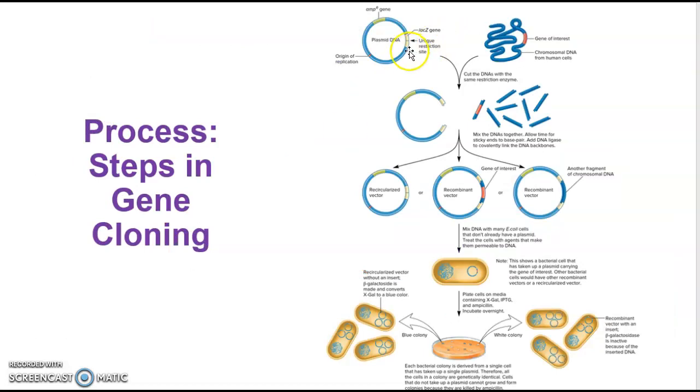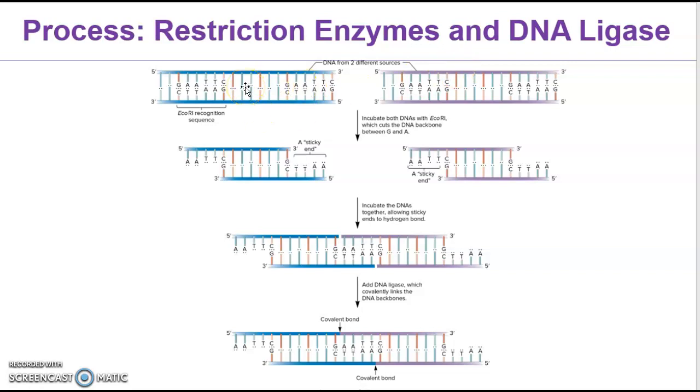So one here is a plasmid and it has this ampicillin resistance gene as well as a lacZ. These are two things that we can consider to be selectable markers that will tell us if we have inserted our gene of interest. And then we have that gene of interest on the chromosomal DNA. We're going to cut them with restriction enzymes. These are enzymes that have specific recognition sequences. They find those recognition sequences and then they cleave the DNA.